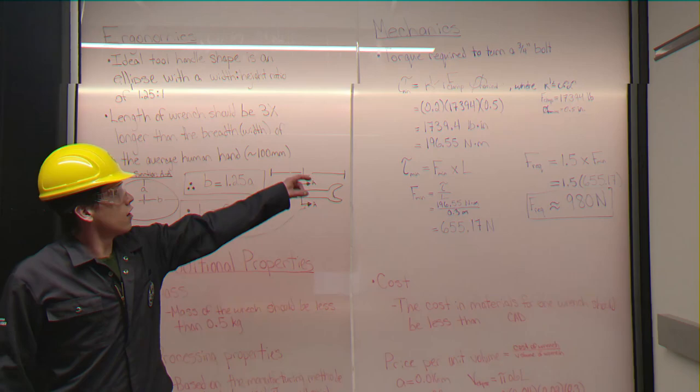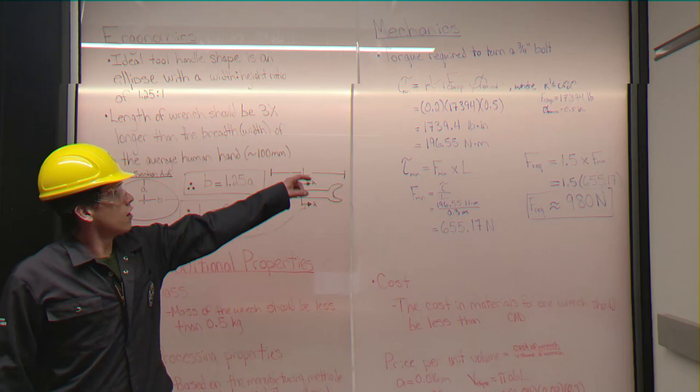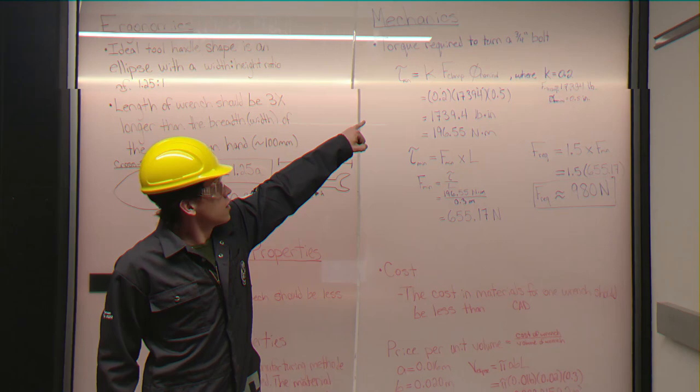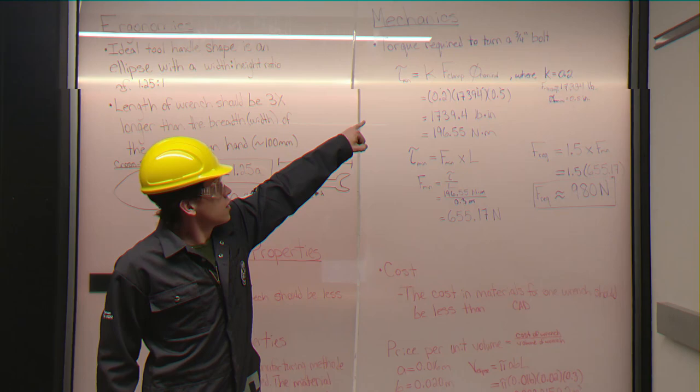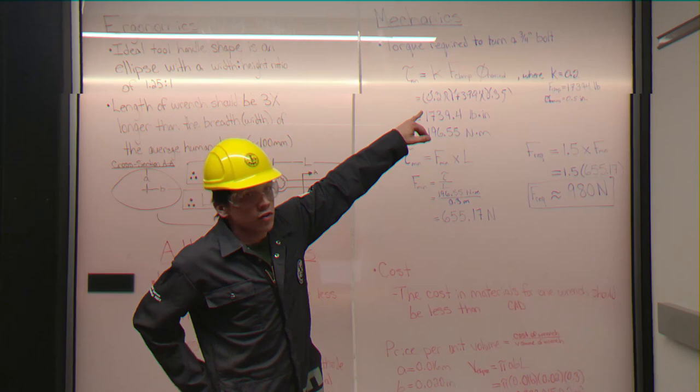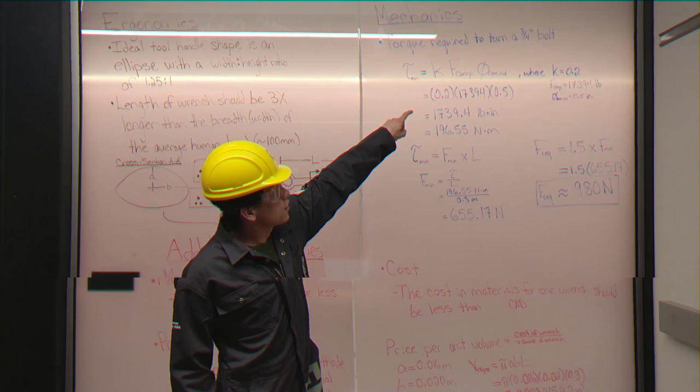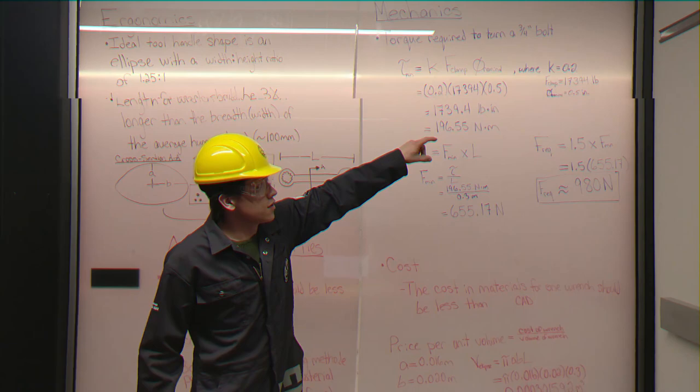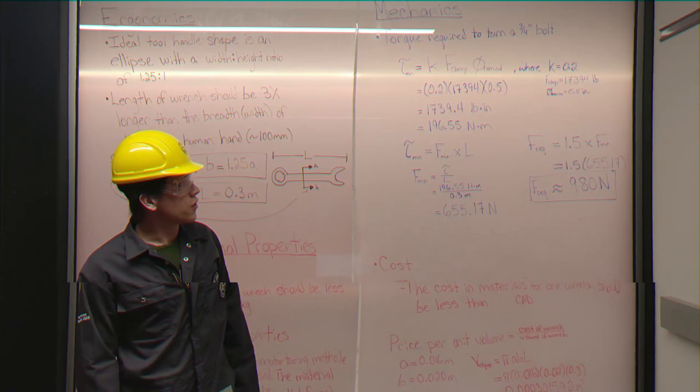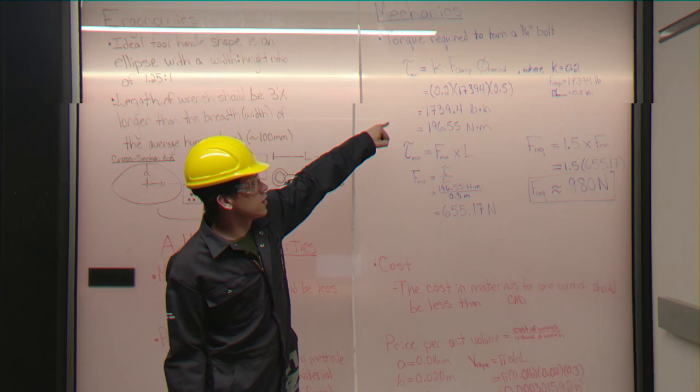Next, we look at the mechanics of the wrench, and we need to find the torque required to turn a ¾-inch bolt. We can find this first from the equation that a constant K times the clamp force, which is the force resisting the turning of the bolt, times the nominal diameter, which the nominal diameter of a ¾-inch bolt is half of an inch. The maximum clamp force, which can be exerted on a ¾-inch bolt, is approximately 17,400 pounds, and the constant K is found to be 0.2 in this instance. This yields us an answer of approximately 1740 pound inches, which then we convert into newton meters for calculations.